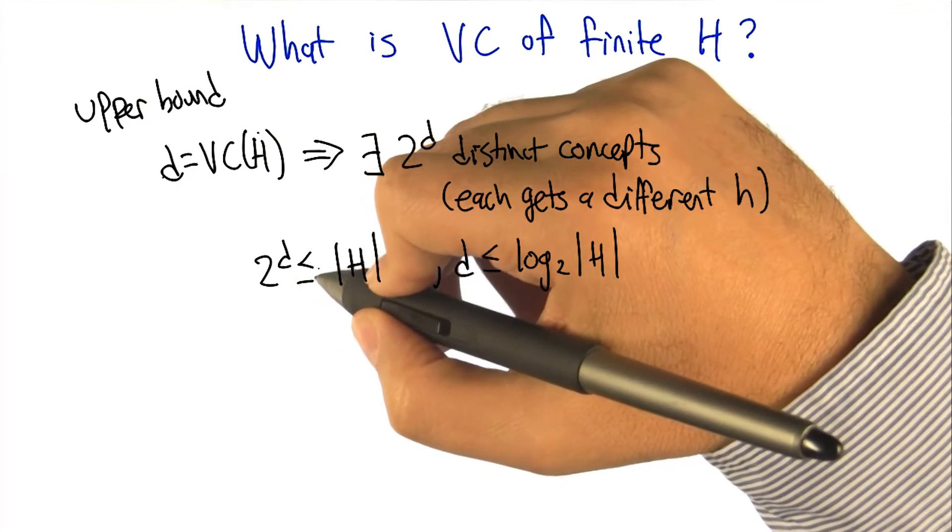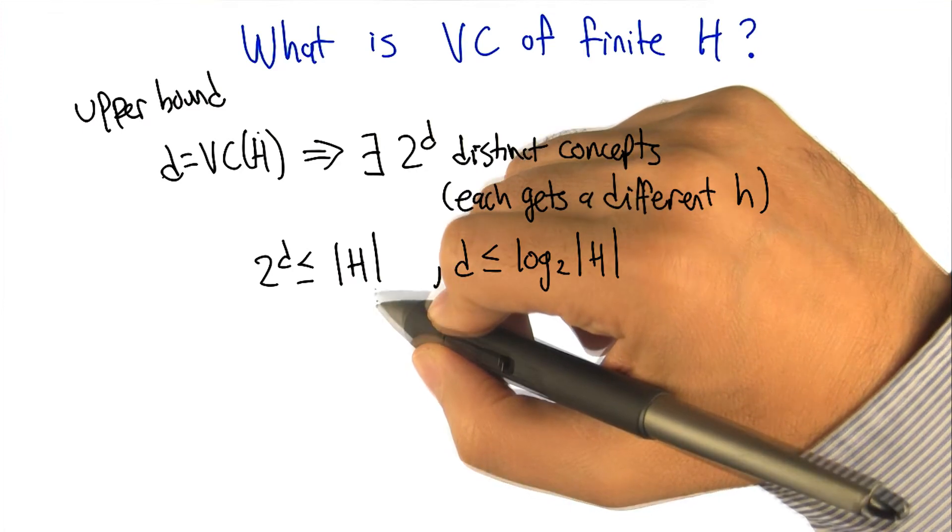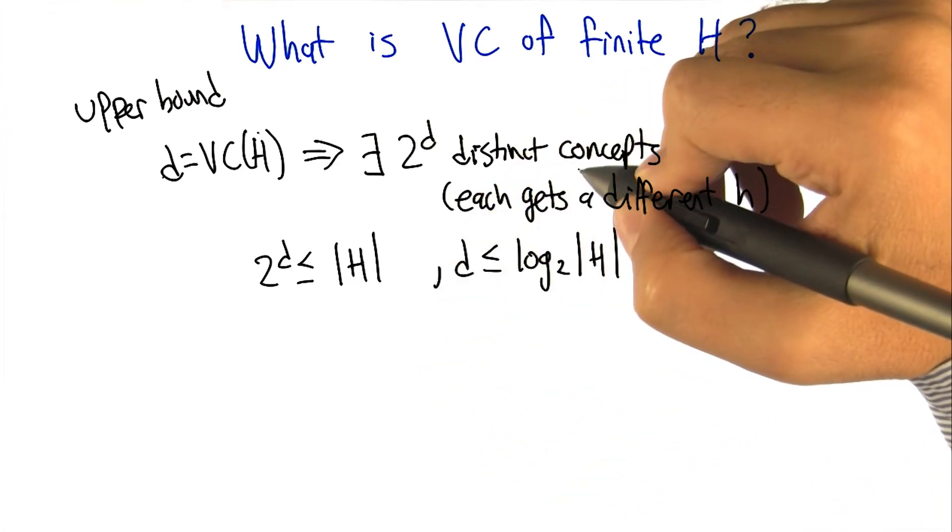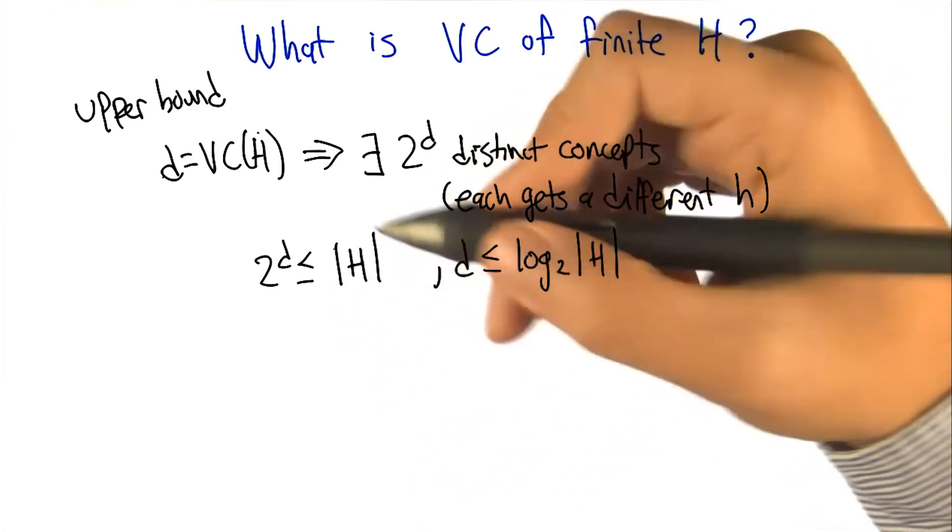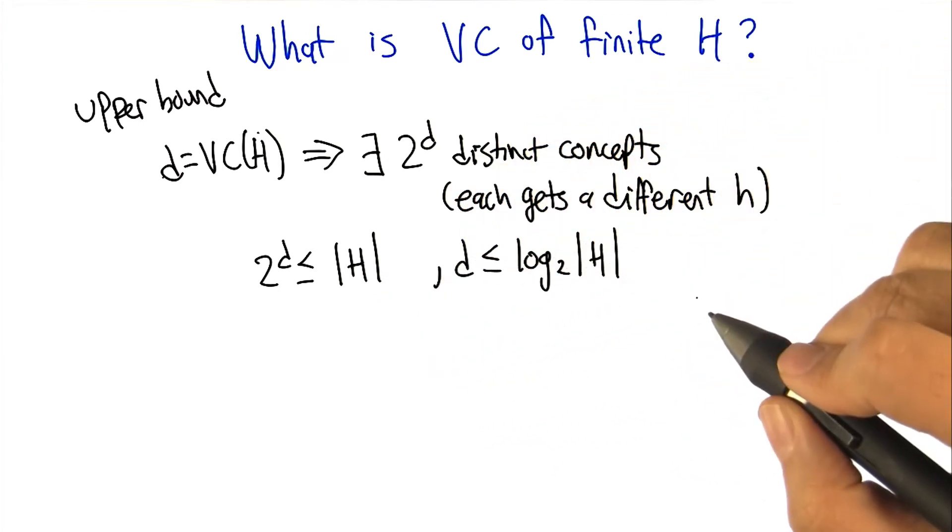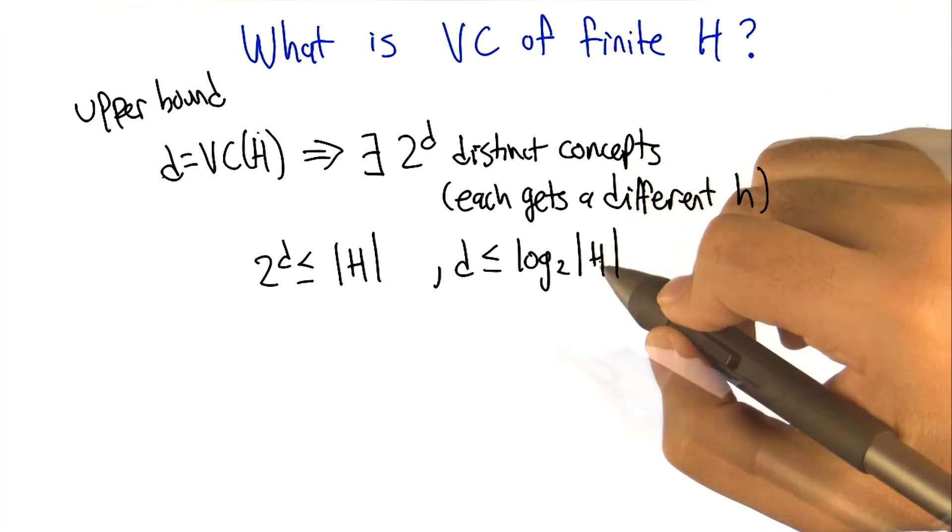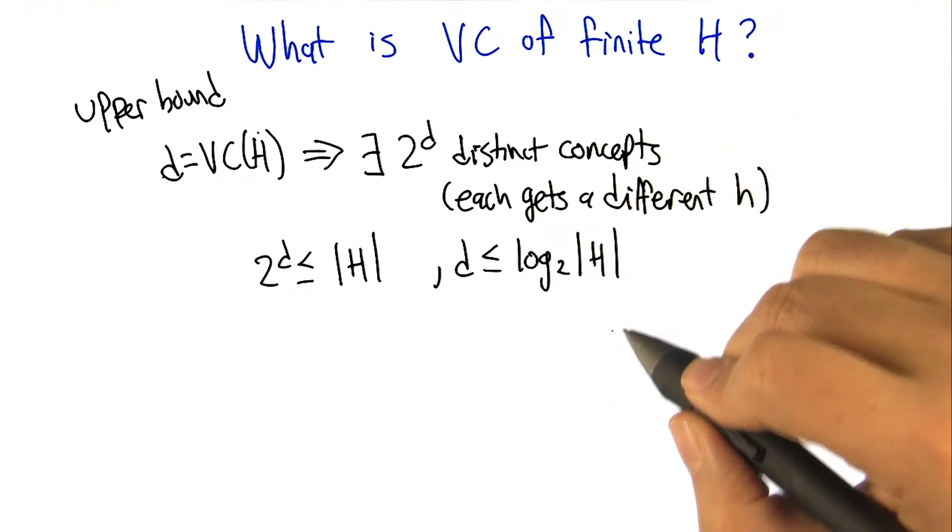So that means that 2 to the D is going to be less than or equal to the number of hypotheses. It could be that there's more, but there can't be any fewer, otherwise we wouldn't be able to get things shattered. So simple manipulation here gives us that D is less than or equal to the log base two of H. So there is this logarithmic relationship between the size of a finite hypothesis class and the VC dimension of it.